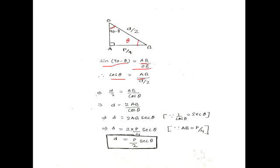Then cos theta will be equal to AB divided by D by 2, because OB is half of the diameter of the wire. Then D by 2 will be equal to AB divided by cos theta.